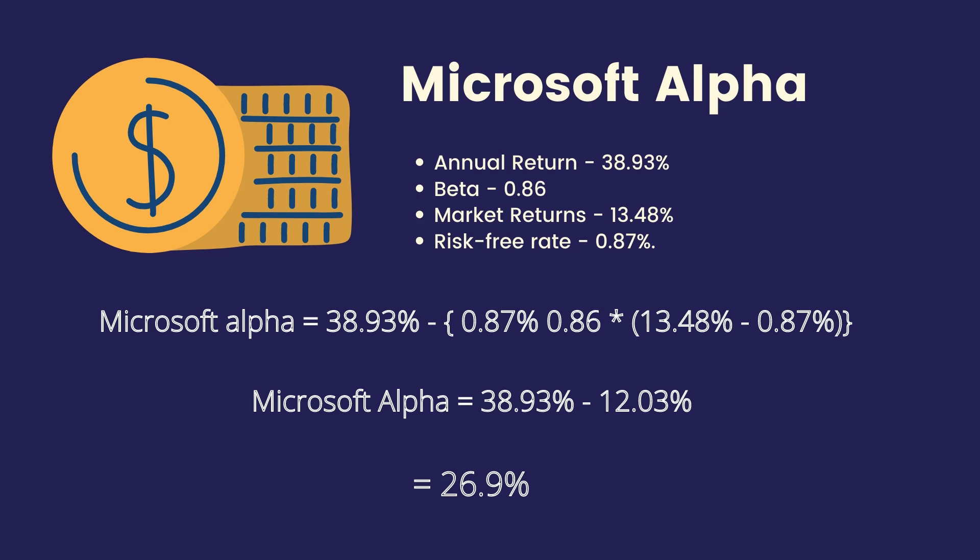An example — Microsoft Alpha. Annual returns: 38.93%, beta: 0.86, market returns: 13.48%, risk-free rate: 0.87%. After all the calculations are formulated, Microsoft Alpha for the year equals 26.9%.